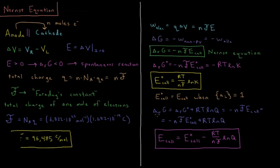Some more relationships we can build here: the Gibbs energy of reaction equals the standard Gibbs energy of reaction plus RT times the natural log of the reaction quotient Q. This equals negative NF times the EMF of the cell, which equals minus NF times E°cell plus RT ln Q. So the EMF of the cell equals the standard EMF of the cell minus RT over NF times the natural log of the reaction quotient. Our next question is: what do we use to calculate the standard EMF of an electrochemical cell?